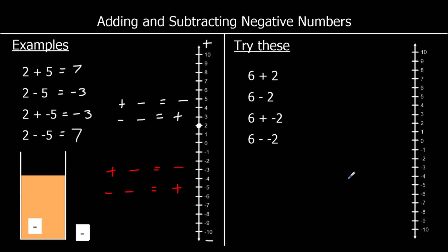There are four questions for you to try. We've got 6 plus 2, which is 8. Six minus 2 is 4. Six plus negative 2 is the same as 6 minus 2, which is 4. And 6 minus a negative 2 is the same as 6 plus 2, which is 8.